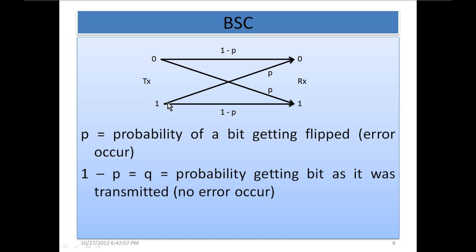1 was transmitted and 0 is received means error has occurred and that probability again is the same. This P and this P is same, meaning this is binary symmetric. It is received as it was transmitted is again 1-P. This 1-P is same as this 1-P and this P is same as this P. The behavior of the channel is equal for both 1 and 0.